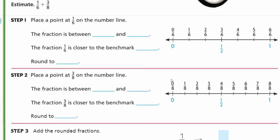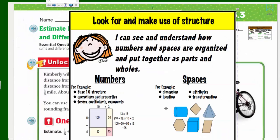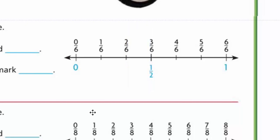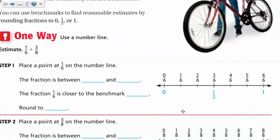This makes me think of Mathematical Practice number seven — look for and make use of structure. We're looking at the structure of the number line and how it's divided using benchmark fractions. I can see and understand how numbers and spaces are organized as parts and wholes. The number line is divided into sixths, with equal distance between each one-sixth mark.